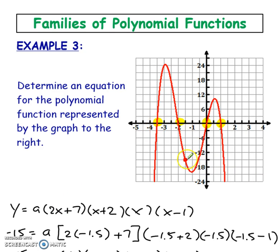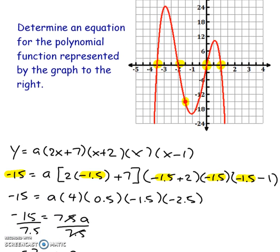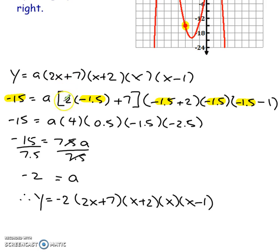So now notice that they gave us this little point right here. That's negative 1.5 and about 15, negative 15. So what we're going to do is we're going to put that negative 15 right there and then negative 1.5 everywhere we have an x in our equation and we're going to solve for our a. That's going to tell us the equation of this graph. So I've simplified this, it gave me a 4, simplified this bracket, and so on. Here, each of the brackets, multiply them all together, we get 7.5, divide them both on either side, and then we get a negative 2. So that is the leading coefficient. This is the equation for this specific graph.